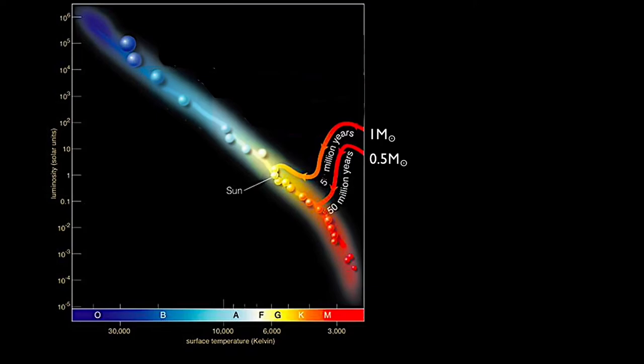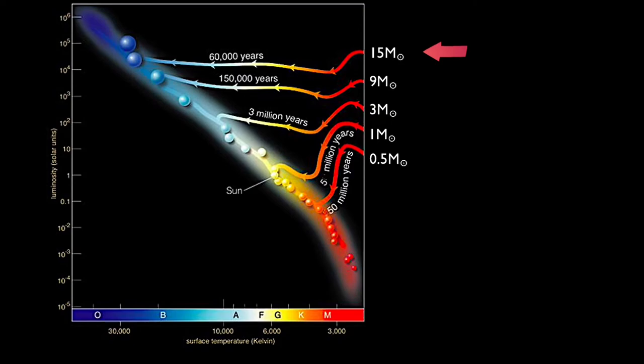Stars smaller than the Sun, say half the Sun's mass, have a more vertical pre-main sequence evolutionary path and take much longer to undergo the process. Larger stars tend to have a less vertical approach to the main sequence. A 3-solar mass star drops in luminosity while continuing to heat up, but not as much as the Sun. Similar patterns can be seen for stars of 9 or 15 solar masses.